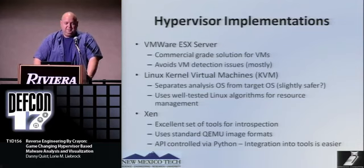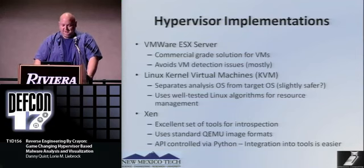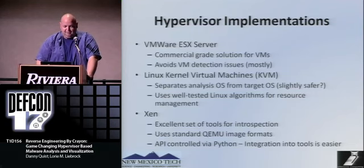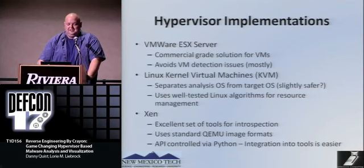There are a couple of hypervisor implementations. VMware ESX Server is a commercial solution that mostly avoids VM detection issues. Linux Kernel Virtual Machines is what I use as my base environment when reverse engineering, just to prevent running malware on my home system. And then Xen — Xen is really nice because it has an excellent set of tools for introspection, largely driven by Georgia Tech. What's nice about Xen is it uses a standard QEMU image format and has an API fully controlled via Python, so you can integrate it into tools.